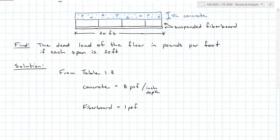From table 1.3 I've written down my two values here. Concrete is eight pounds per square foot per inch and fiberboard is one pound per square foot. Our concrete is four inches deep, so I need to multiply this eight PSF by that four inch depth. This gives us 32 pounds per square foot.